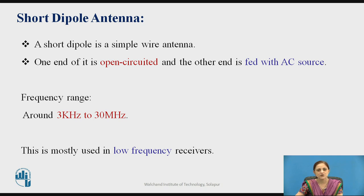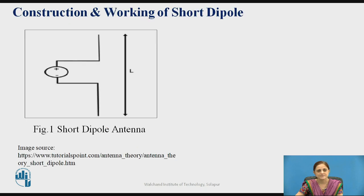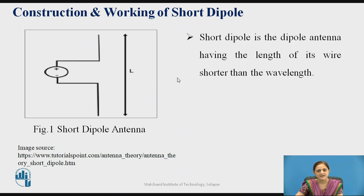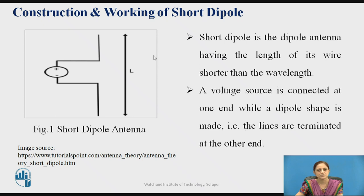Now consider the first type of antenna: the short dipole antenna. A short dipole antenna is a simple wire antenna where one end is open-ended and the other end is connected to an AC circuit. The frequency range for this type is around 3 kilohertz to 30 megahertz, and it is most commonly used in low frequency receiver circuits. The length of its wire is shorter than the wavelength, and therefore it is known as the short dipole antenna.